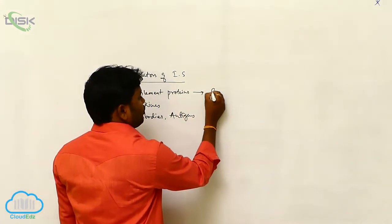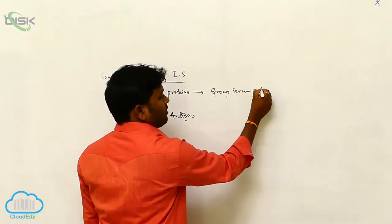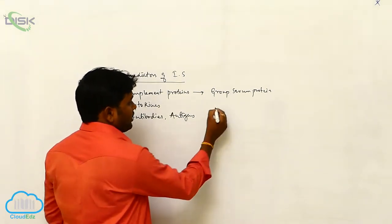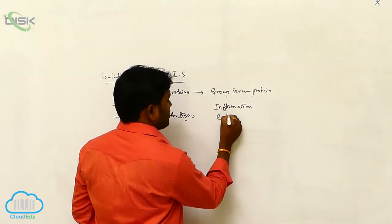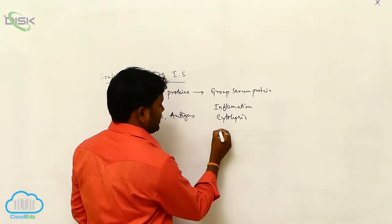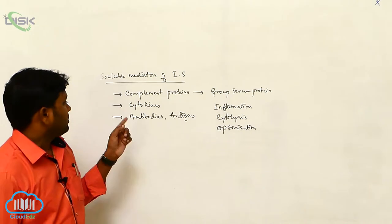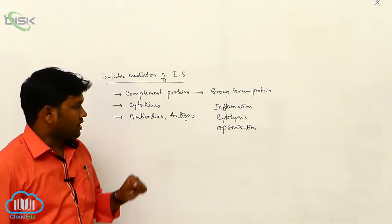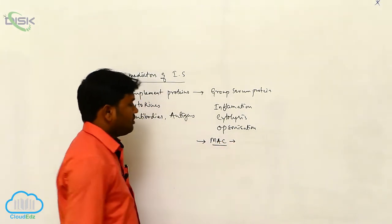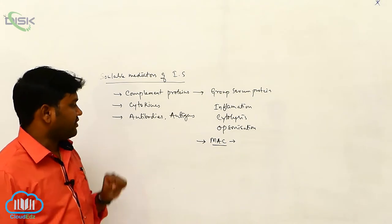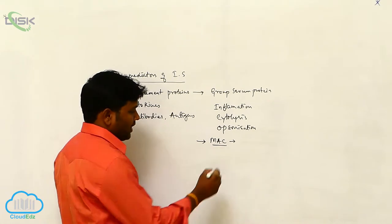Complement proteins are a group of serum proteins responsible for inflammation, cytolysis, and opsonization. When these complement proteins are activated, they form the membrane attacking complex.